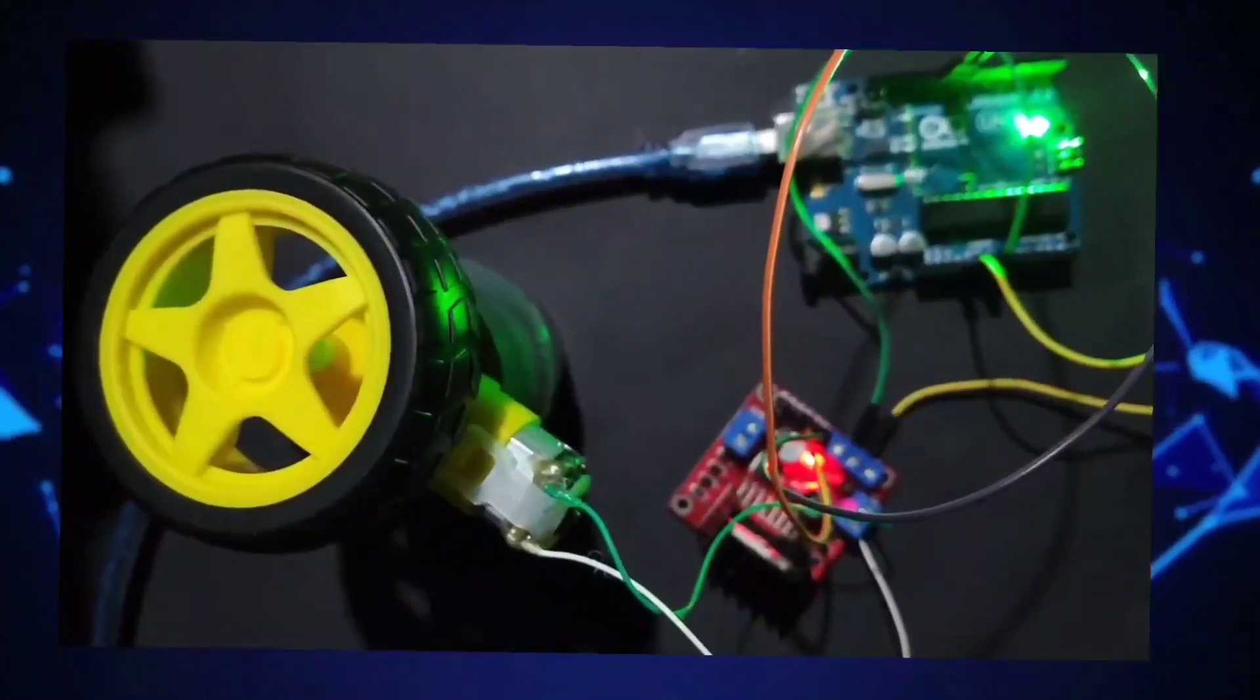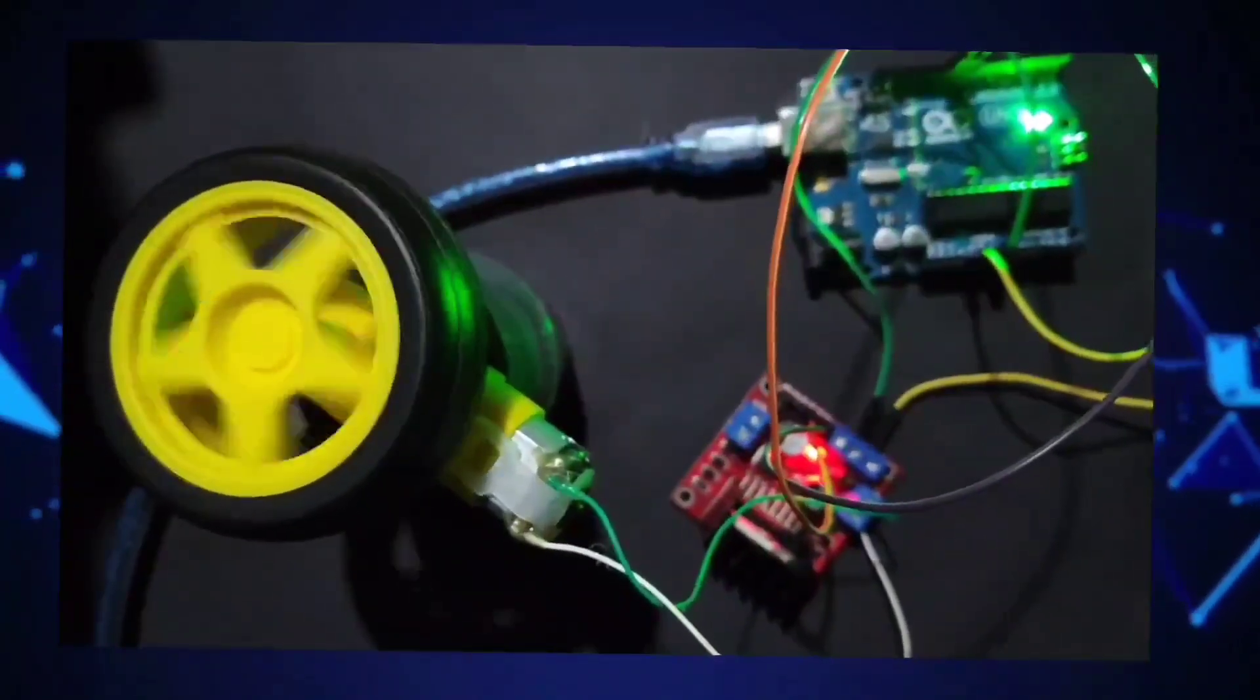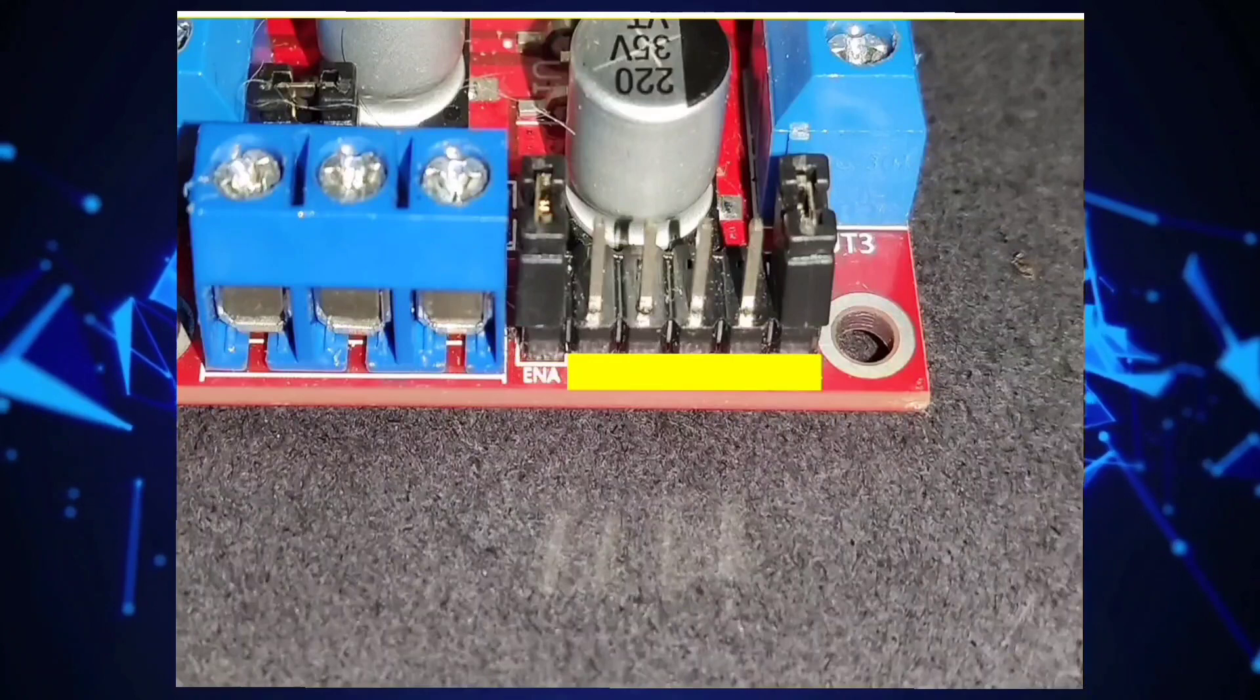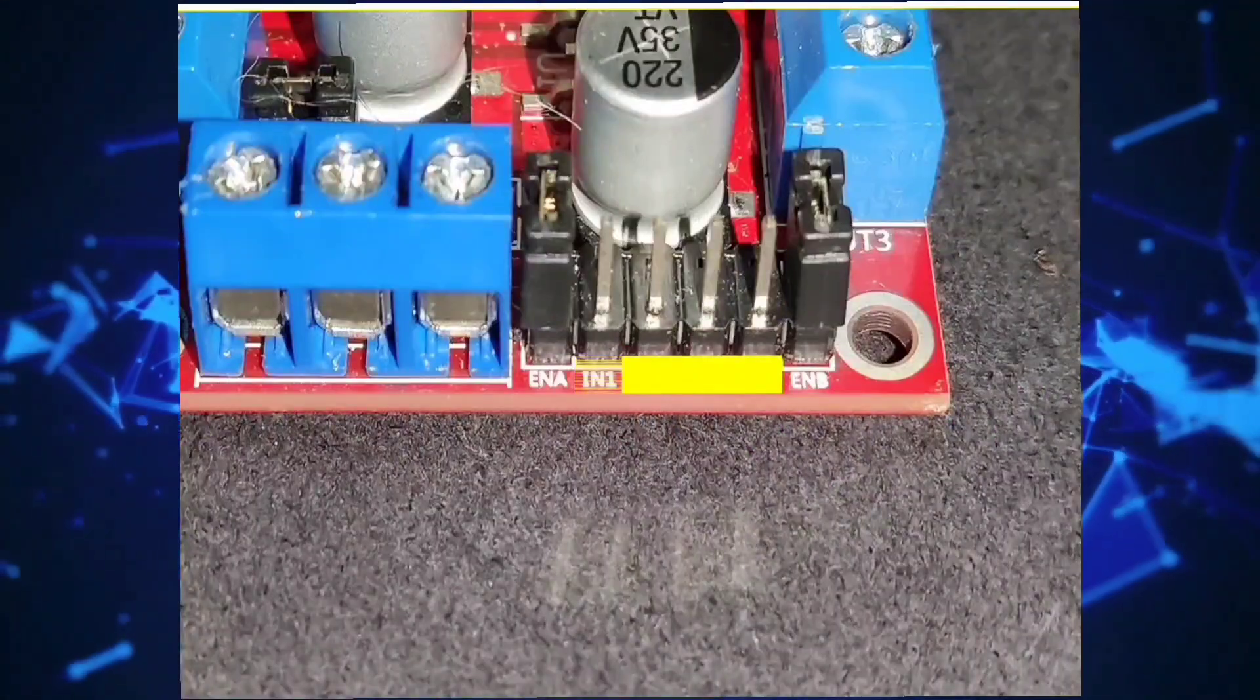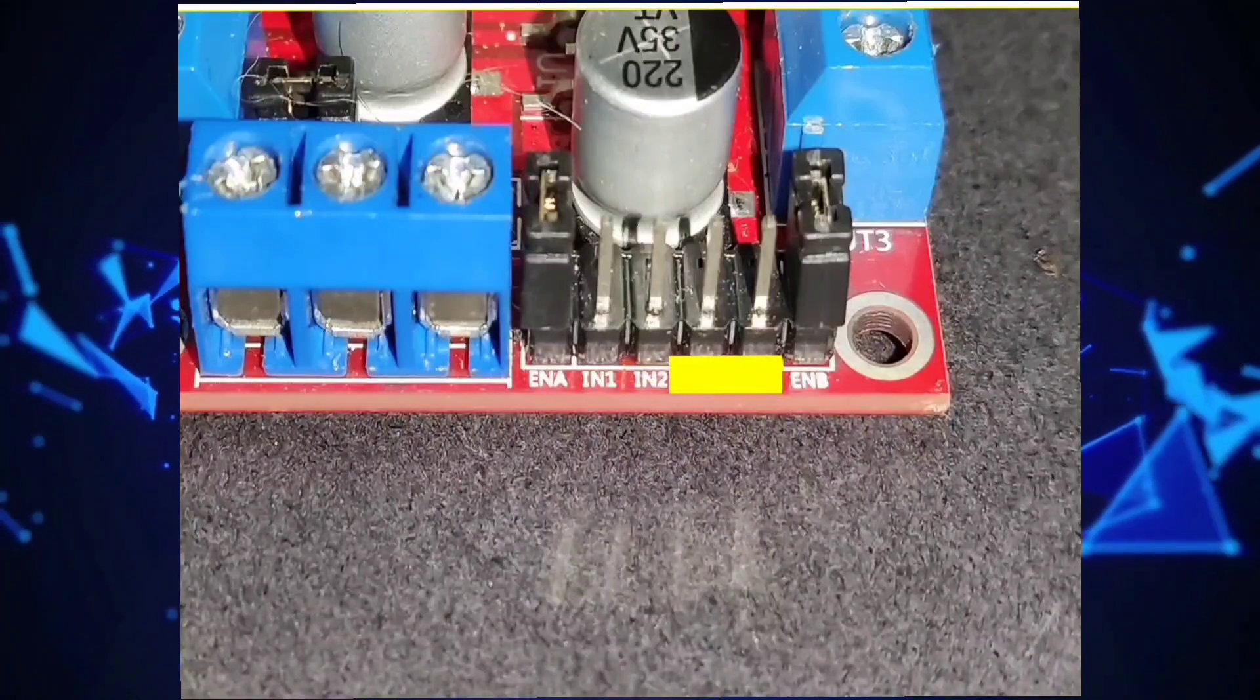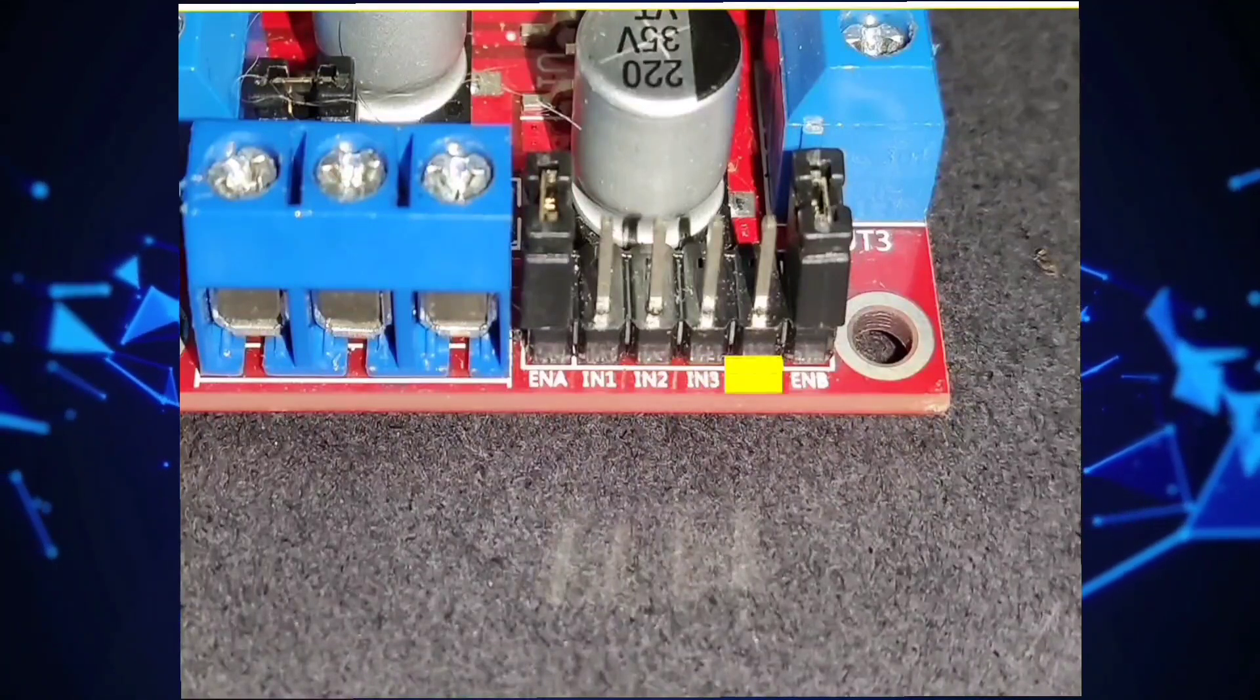The L298N has several control inputs, including two enable inputs, ENA and ENB, to enable or disable the respective motor channels, and four digital control inputs, IN1, IN2, IN3, and IN4, to control the motor direction.